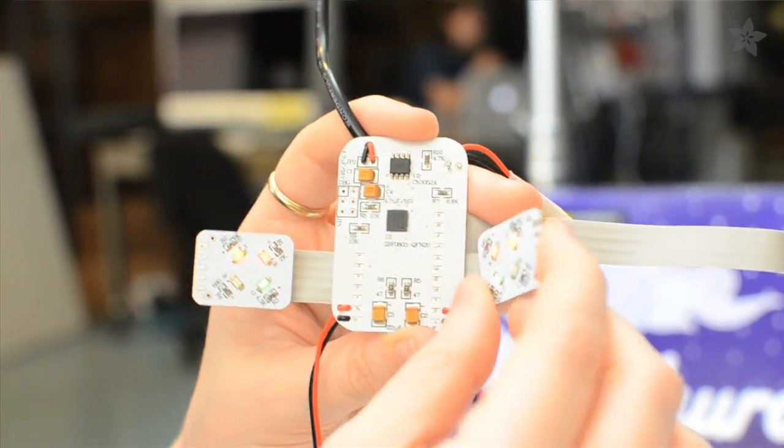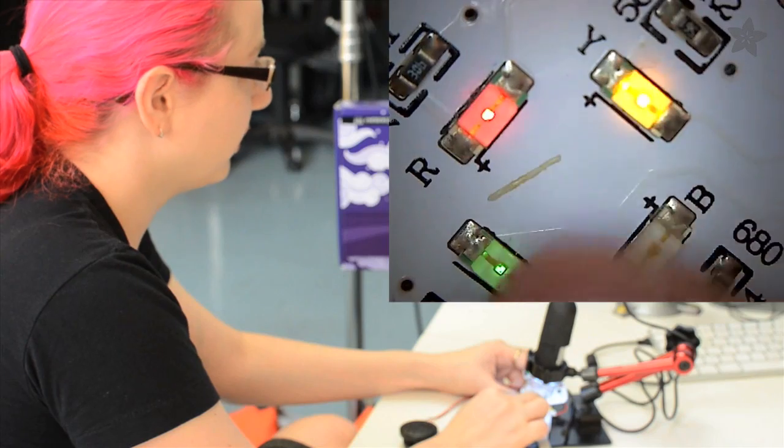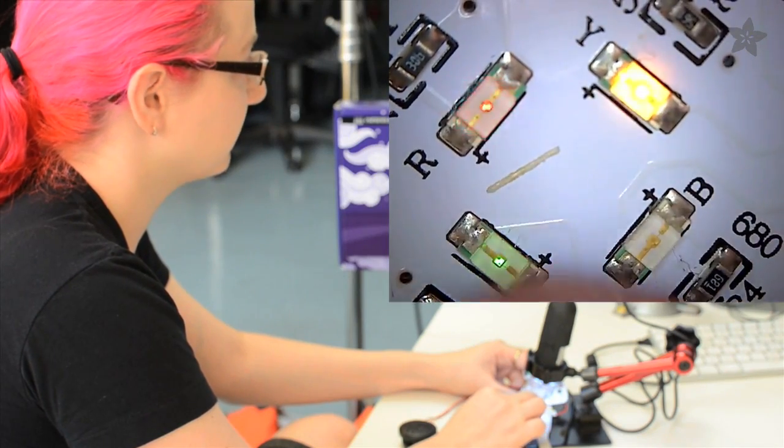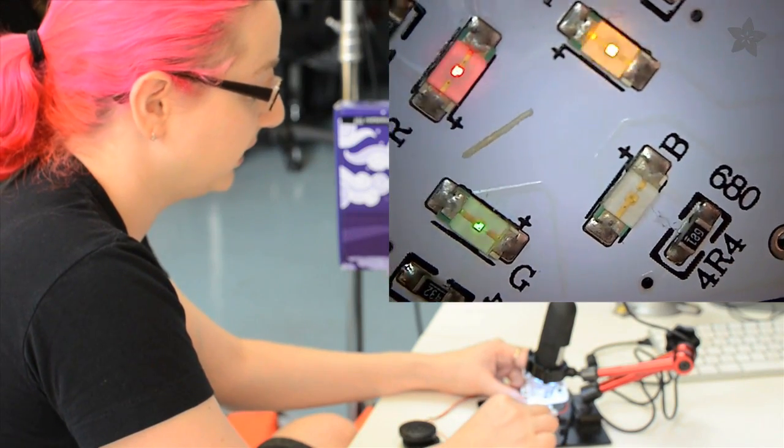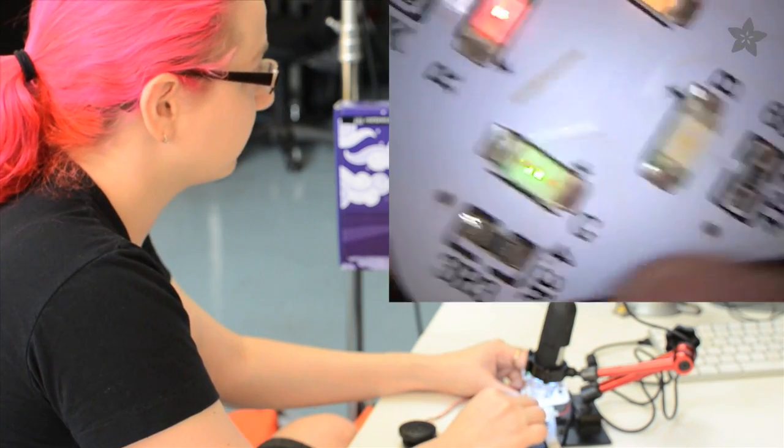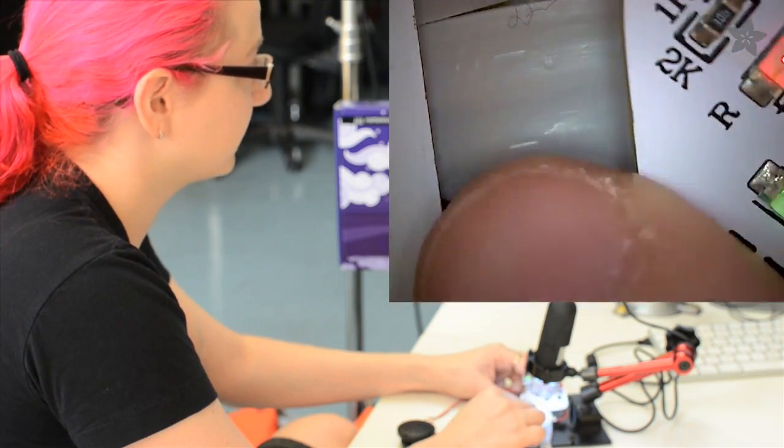This is the LED light board for the eyes. So you have four LEDs. These are basic surface mount LEDs. You've got R for red, yellow, green, and then blue, which isn't on at this point. And there's little resistors for each one of them. And this connects with another flex cable to the main board.